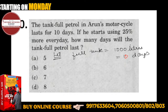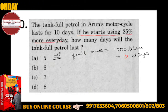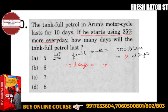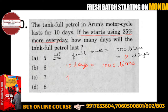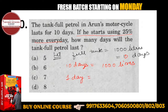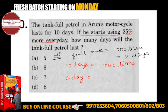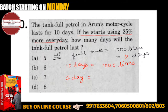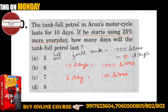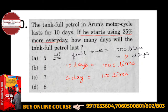If he starts using 25% more every day, we calculate daily consumption. If 10 days of consumption is 1000 liters, then one day's consumption is 100 liters. So, one day consumption is 100 liters.